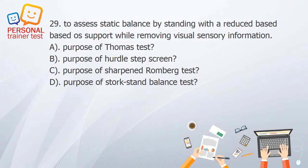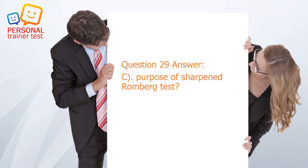Question 29. A. Purpose of Thomas test. B. Purpose of hurdle step screen. C. Purpose of Sharpened Romberg test. D. Purpose of stork stand balance test. Answer: C. To assess static balance by standing with a reduced base of support while removing visual sensory information — purpose of Sharpened Romberg test.